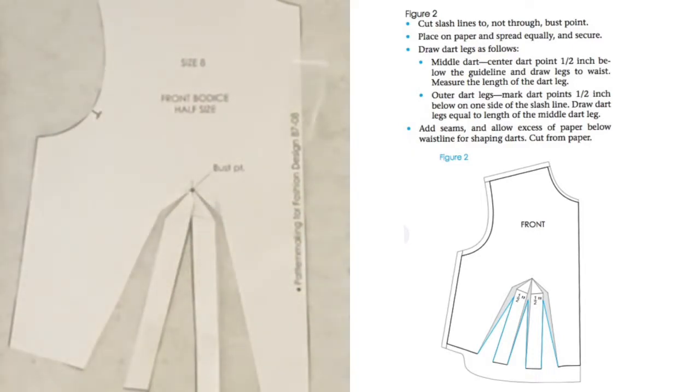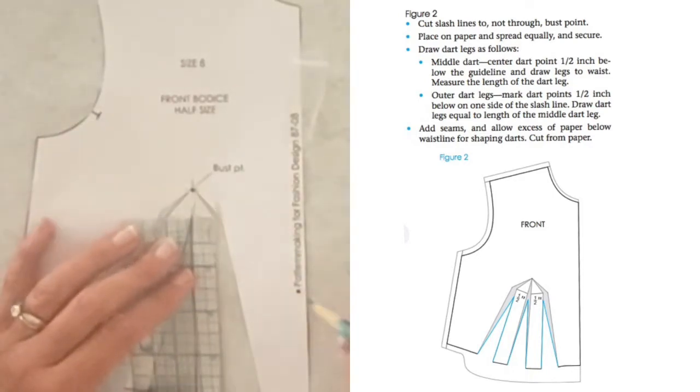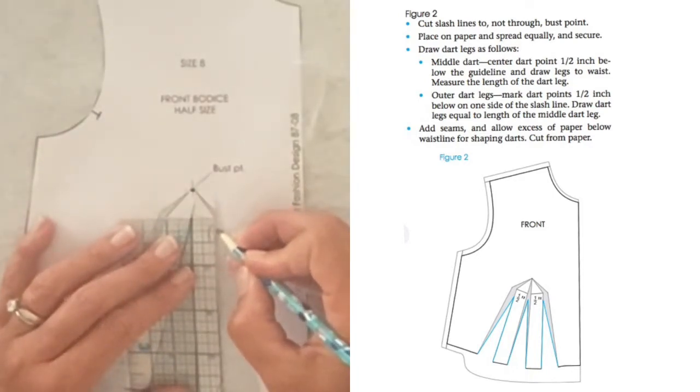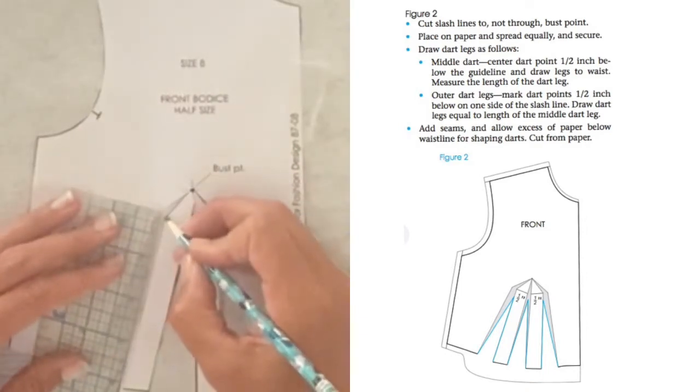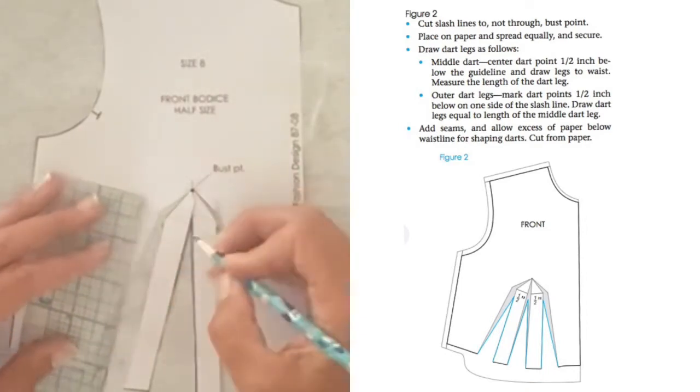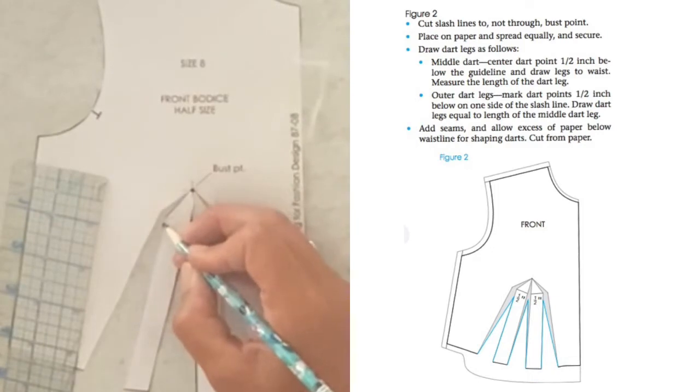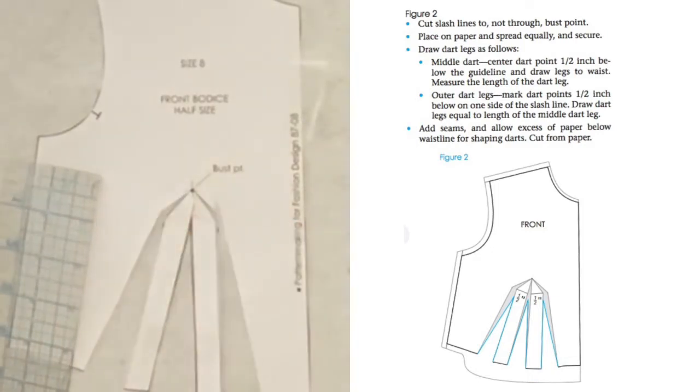It's a little bit different for the sides. The outer dart legs—mark your dart points half an inch below on one side of the slash line, draw the dart legs equal in length to the middle dart leg. They want us to measure this and make sure our dart legs are the same length. We're on half scale, so a quarter inch—that's going to be our dart point from each side. You can see that in the illustration, it's highlighted in blue.